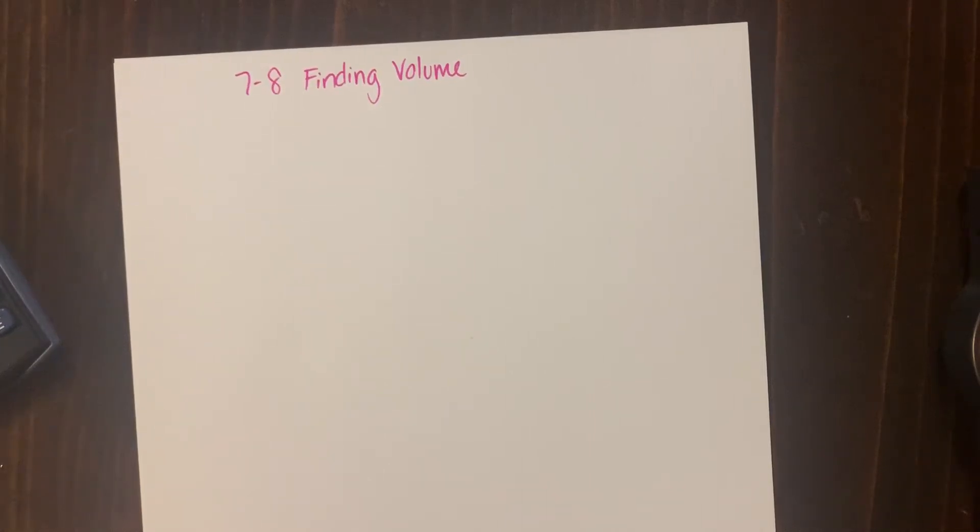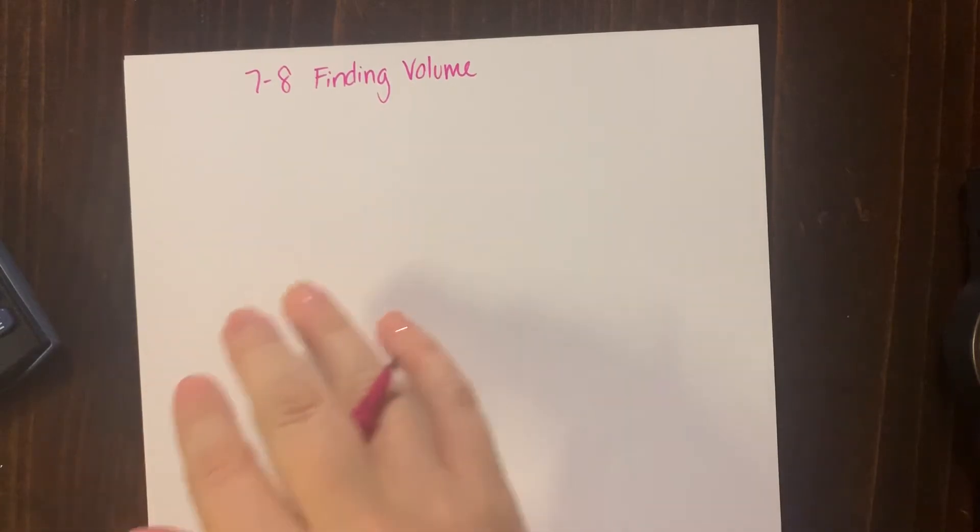All right, good morning sixth grade. We're going to go ahead and get started on lesson 7-8. You guys did a great job finding your surface area. I'm very proud of you. The title of the lesson is actually very long: Finding Volume with Fractional Edge Lengths. But I'm not sure I've ever talked to you about volume before at all, so I'm going to start with finding volume.